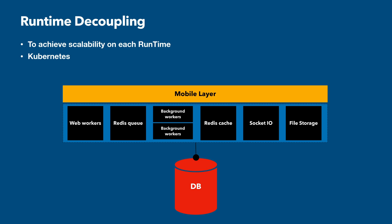The very first thing we did is decouple our runtime. Frappe consists of a lot of runtimes and components — web workers, Redis queue, background workers, Redis cache, Socket.io, and file storage. The first thing we did is decouple these runtimes to achieve scalability on each runtime independently.